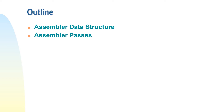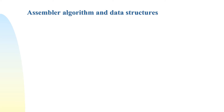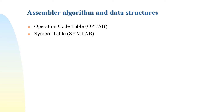The assembler uses three data structures. The first one is the operation code table, or OPTAB. The second one is the symbol table, or SYMTAB. And the third one is the location counter. We will see each one of them.